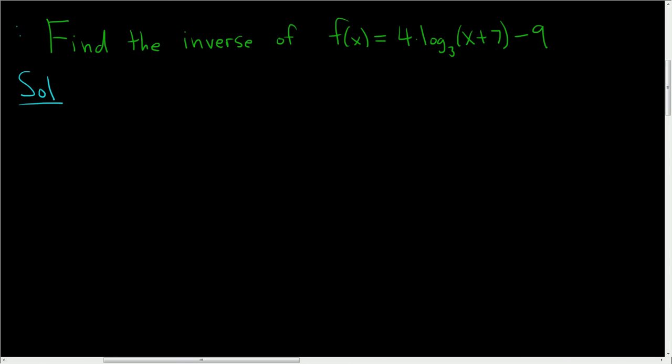We're being asked to find the inverse, so let's go ahead and work it out. The first step in this problem is to replace f of x with y. So y is equal to 4 times the log base 3 of x plus 7 minus 9.